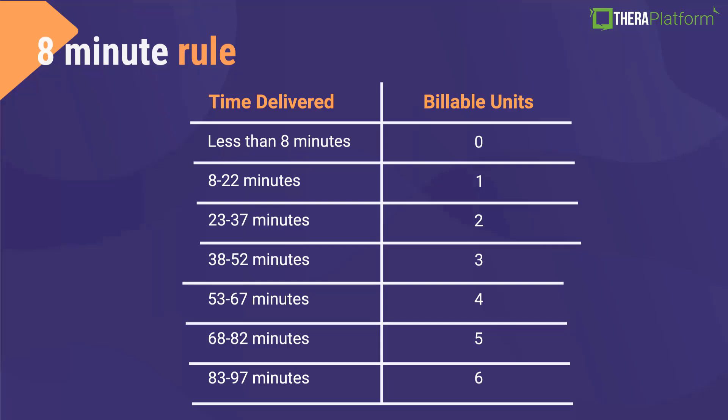83 to 97 minutes would be 6 units. When you fill out the CMS 1500 — if you submit claims on paper — you have to enter the number of units. If you are using an EHR to submit claims, your EHR should give you an option to enter units along with the timed CPT code. If you don't enter units, your claim will be rejected. You can always fix this, but keep in mind that if you use a timed CPT code, follow the 8-minute rule and make sure to enter the units on the claim.